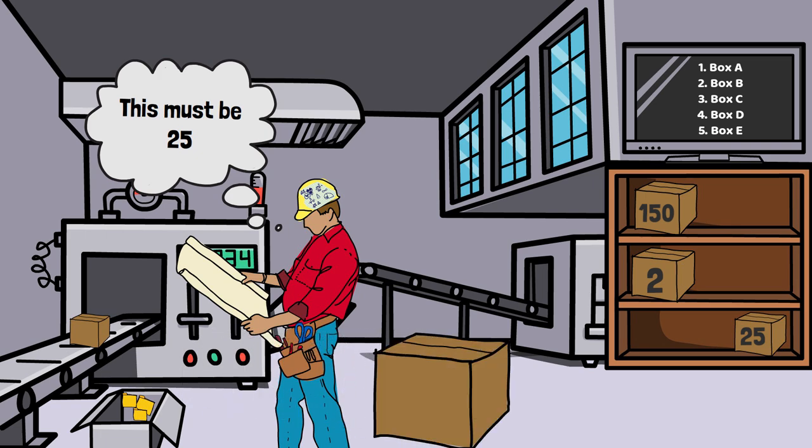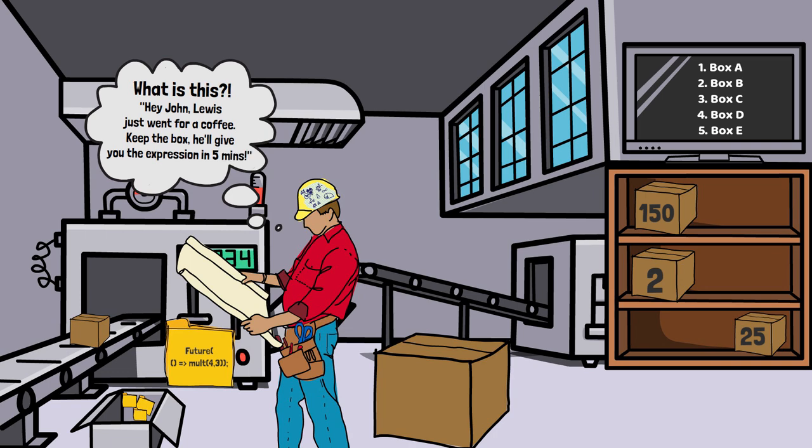For the fourth box, however, John witnesses something he never experienced before. He stops the roller, opens the box, and inside of it, there was nothing but a message from his boss. The message was saying that one of the guys in charge of creating the expression went to the nearest coffee shop for five minutes. Therefore, this box ended up empty. He promises though that after five minutes in the future, the guy will deliver the expression directly, since he will have it written on the road back to the factory. John already has an empty box, so it makes sense to receive just the content for the box in the future.